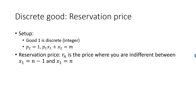If good 1 is an ordinary good, then the demand for good 1 will increase when the price of the good falls. So if R1 is the price where she is indifferent between 0 and 1 units, and R2 is the price where she is indifferent between 1 and 2 units, then R2 must be lower than R1 if the good is normal. In the same way, R3 must be less than R2, and so on. Let's have a look at the demand curve for a discrete ordinary good.